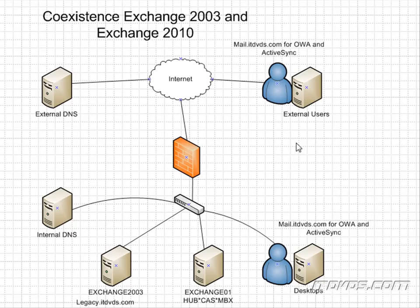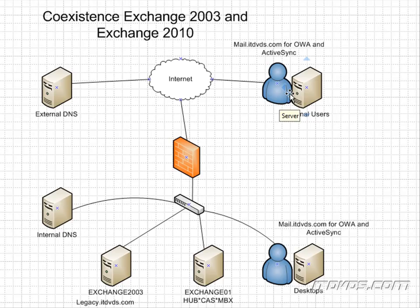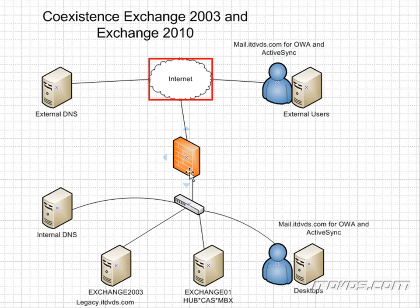For Outlook Web Access or ActiveSync, in order for the coexistence to work properly, we're going to configure another domain name — legacy.itdbds.com — which will be used to access our Exchange 2003 server. But we're going to configure it so that the client doesn't even know about it; users don't have to reconfigure their Outlook or go to a different URL. They're still going to go to mail.itdbds.com, and that request goes through the Internet, through the firewall.